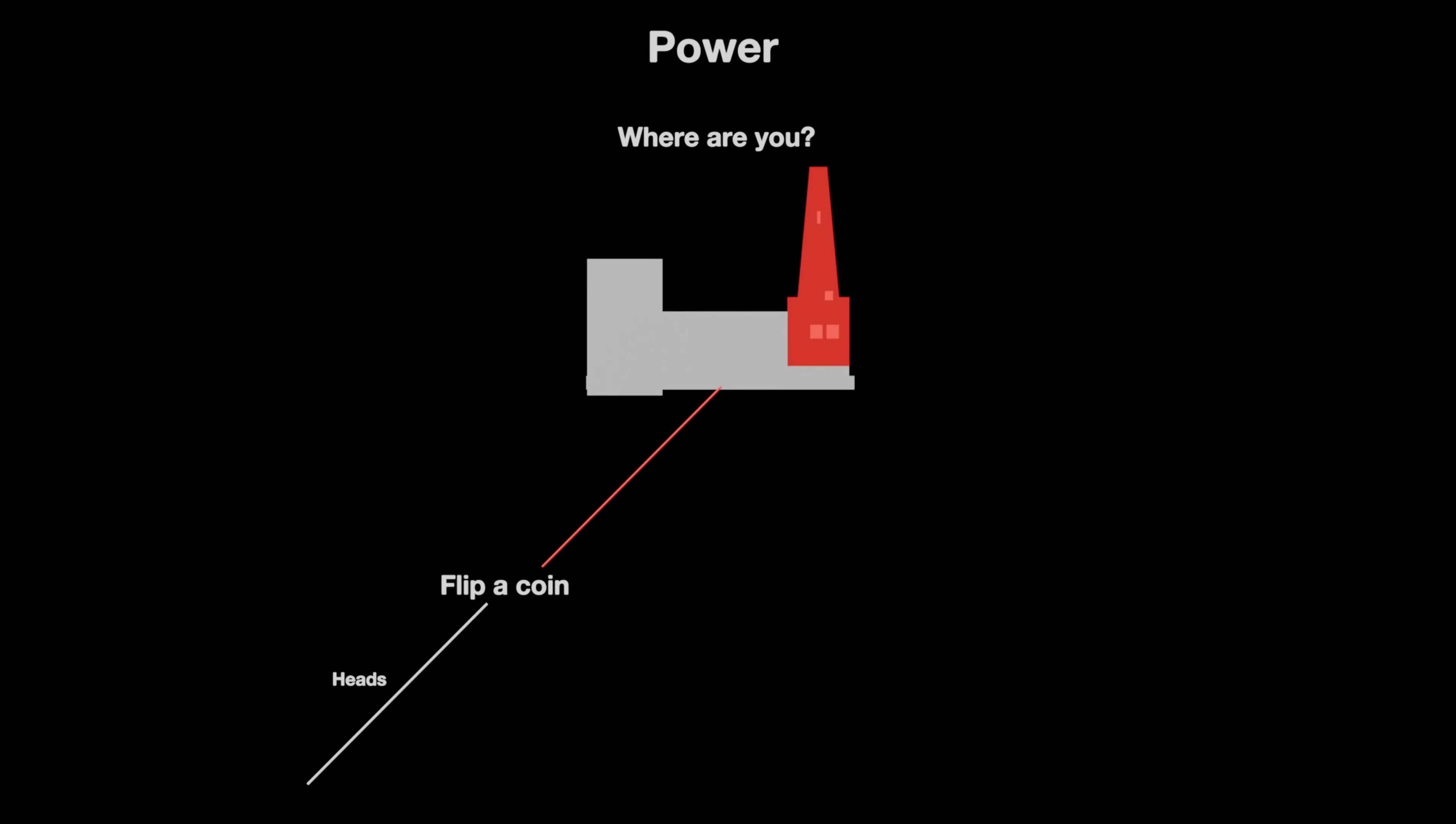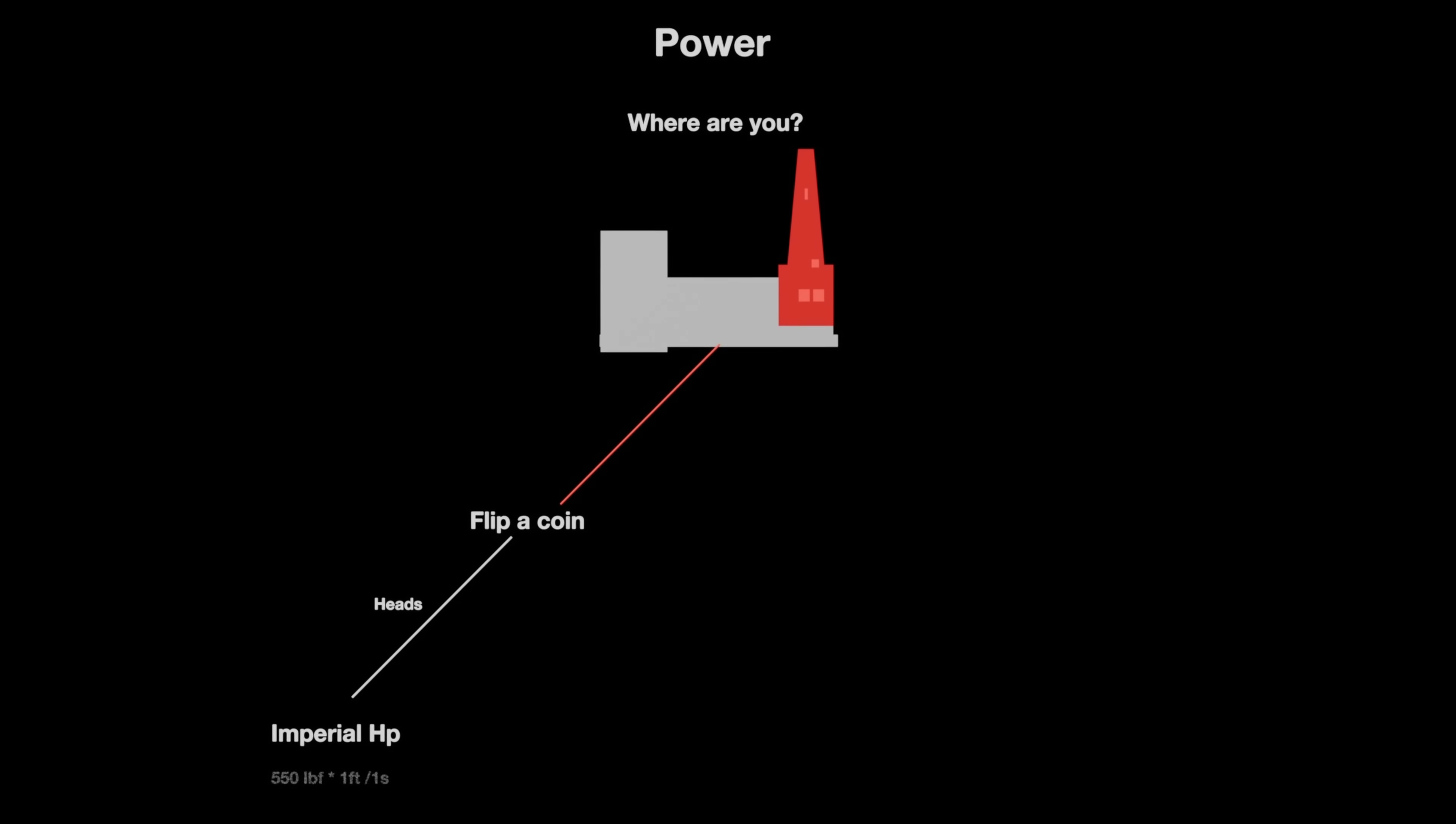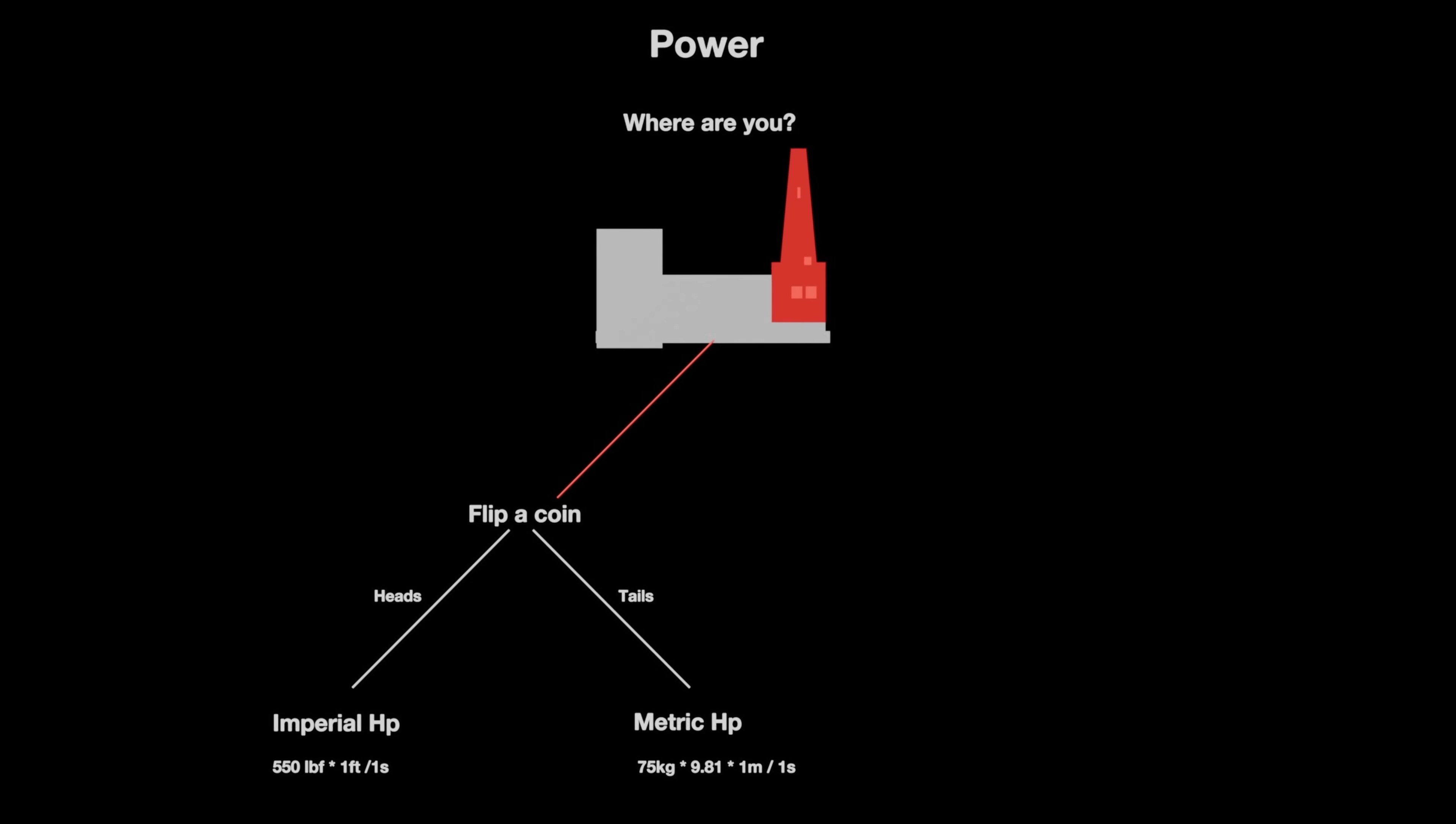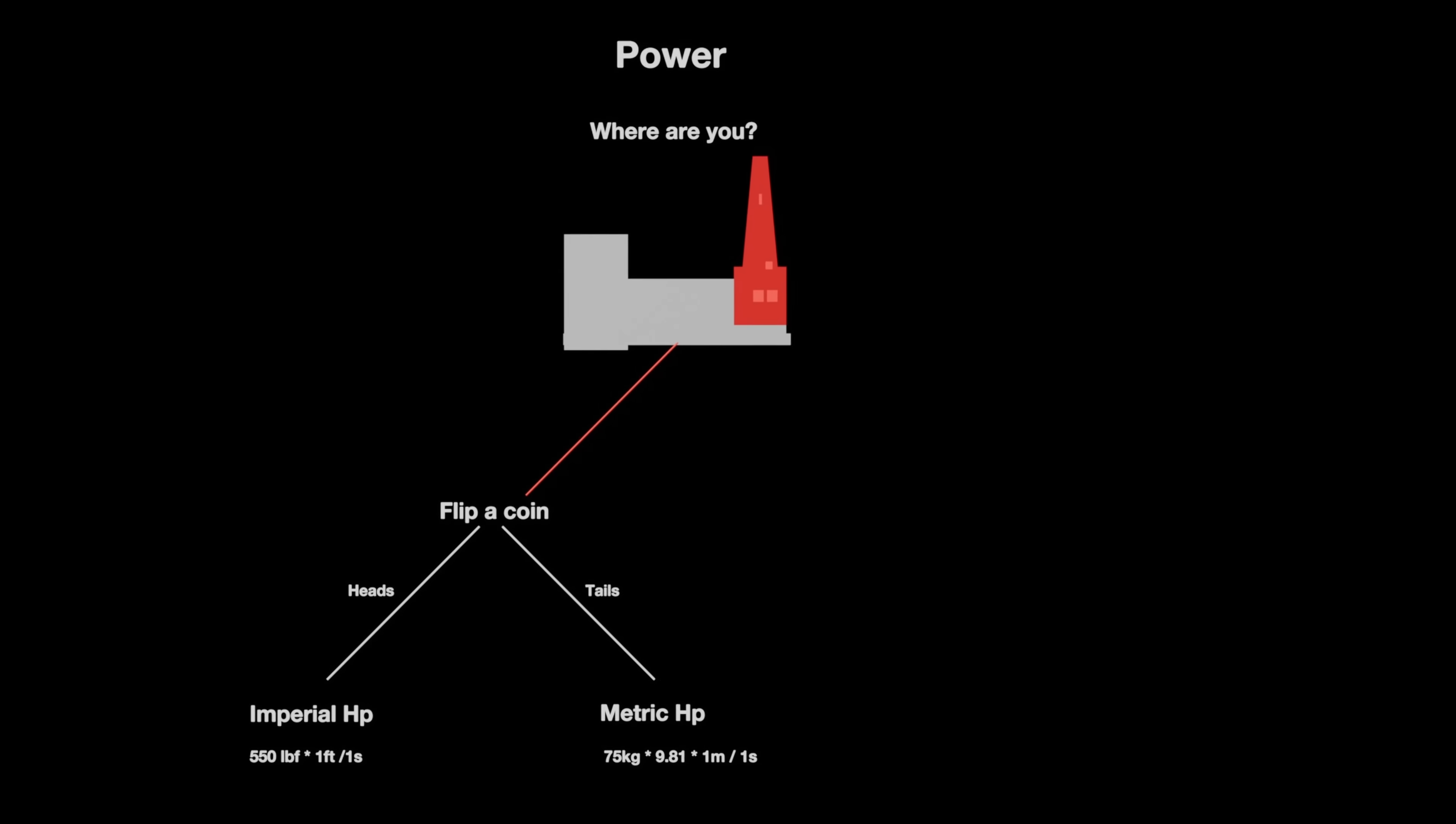But what is a horsepower? Well, that depends on who you ask. Sometimes it's the power needed to lift 550 pounds one foot in one second. Sometimes it's the power needed to lift 75 kilograms one meter in one second. But what? Wait, was that defined with metric units? Do they both give different results? Yes and yes.